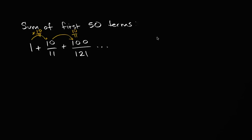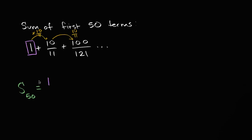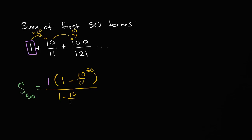We can apply the formula we derived for the sum of a finite geometric series. The sum of the first 50 terms is going to be equal to the first term, which is one, times one minus the common ratio — the common ratio here is 10 elevenths — so one times one minus 10 elevenths to the 50th power, to the power of how many terms we have, all of that over one minus our common ratio.